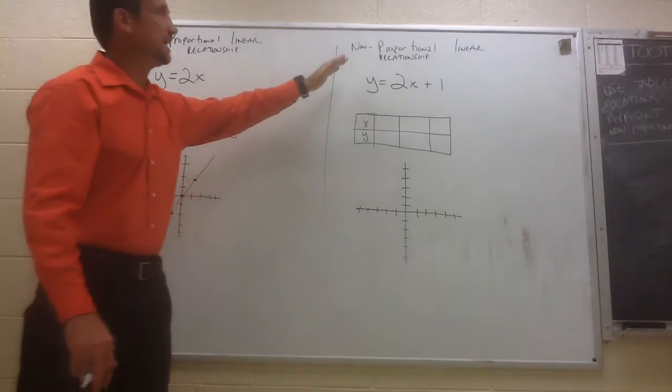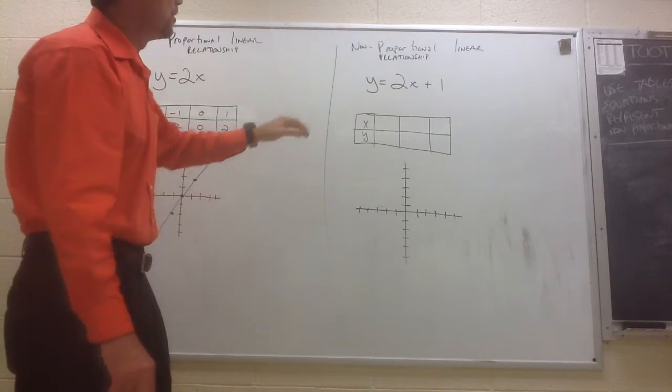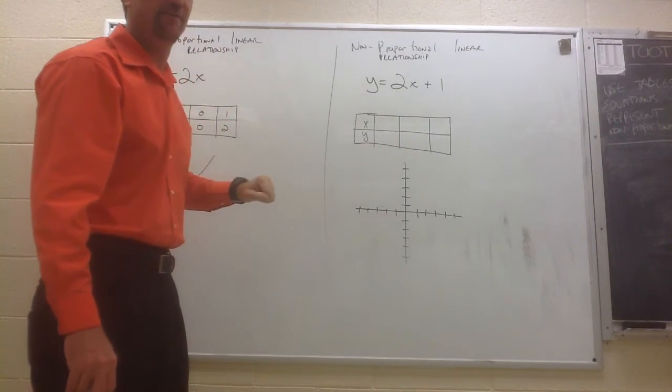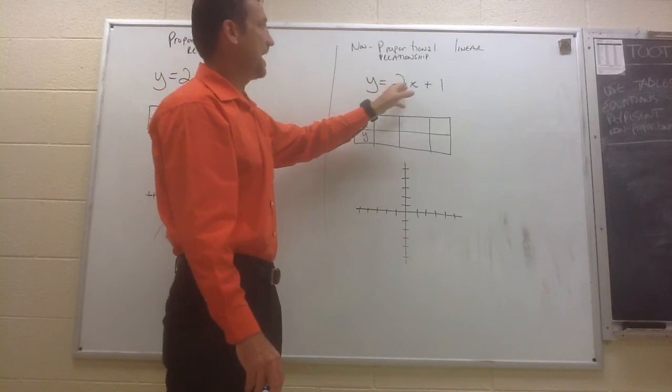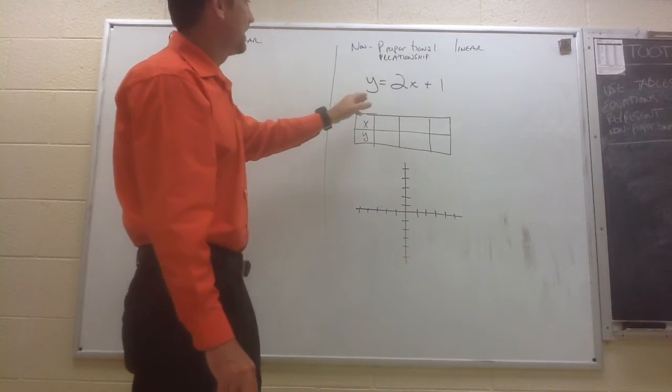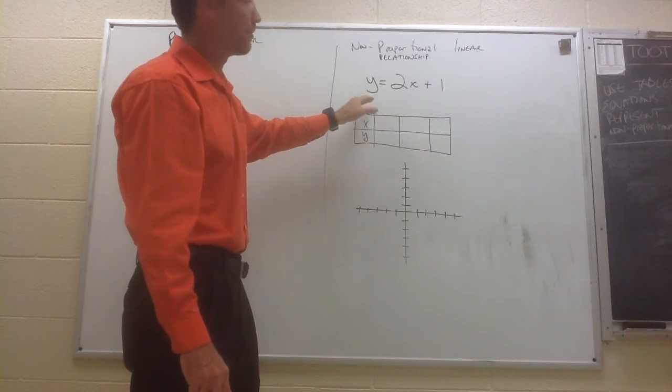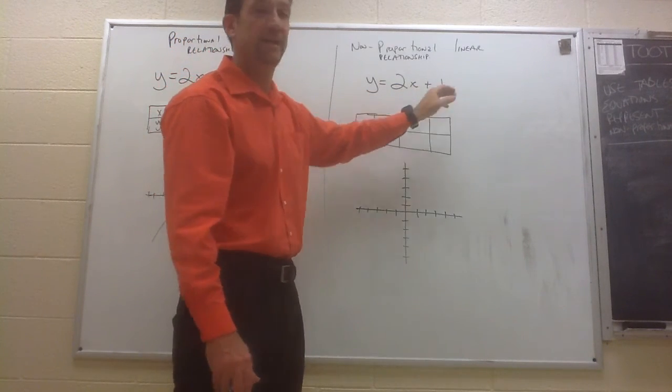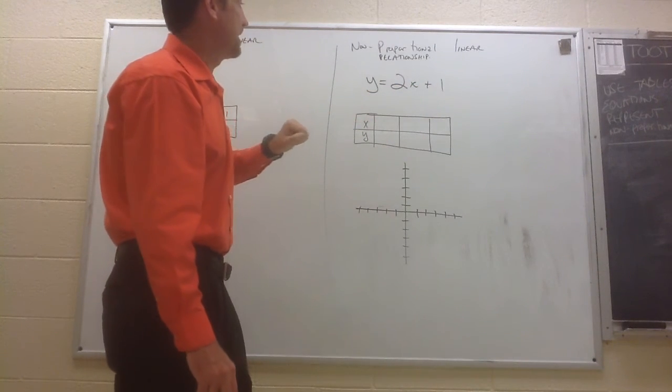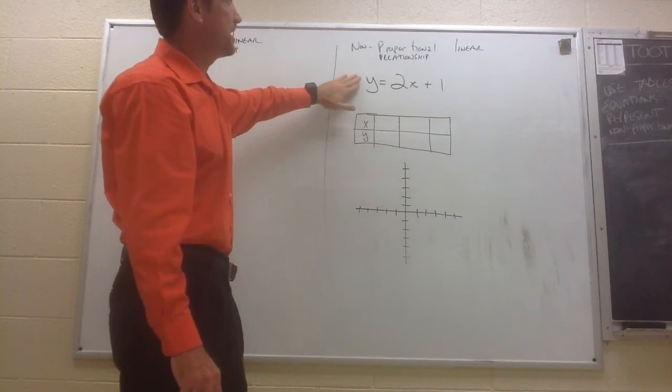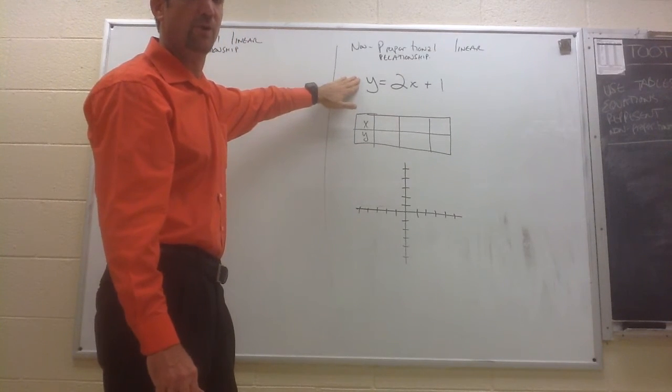Let's take a look at a non-proportional linear relationship. Notice the equation looks a little bit different. It's no longer y equals kx, but we have a different form of an equation. This is slope-intercept form, y equals mx plus b. But in any case, if you just take a look at this equation right here, y equals 2x plus 1.